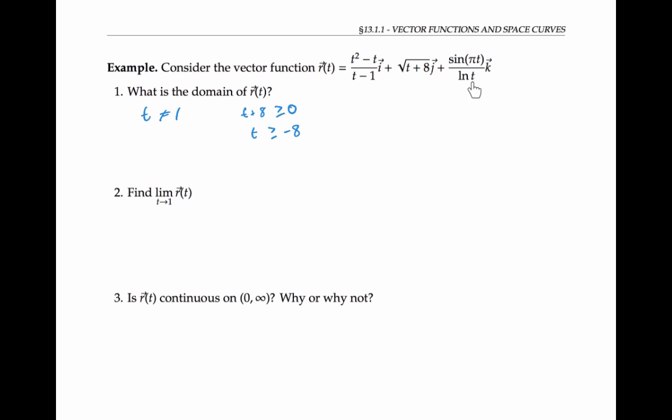Looking at the third component, we know that we can't take the ln of a negative number. So we need that t has to be greater than zero, we can't take ln of zero either. Also, we know that we can't divide by zero. So we need ln of t to not equal zero. In other words, t had better not equal one.